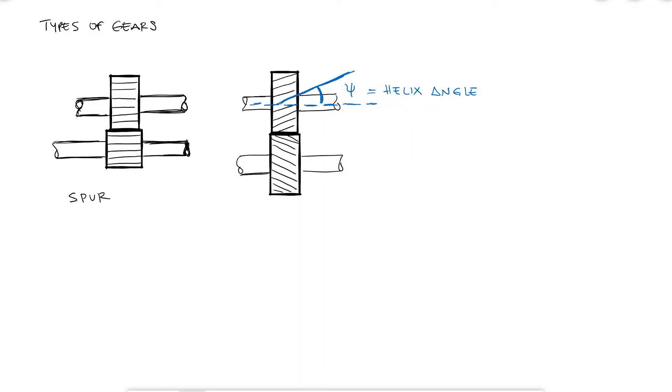If the angle psi, starting at the axis of the gear and rotating towards the orientation of the teeth is a negative angle, meaning you moved clockwise to get to the teeth orientation, the gear is known as a right-hand helical gear. If you move counter-clockwise, starting from the axis of the gear towards the line that is parallel to the teeth of the helical gear, the gear is known as a left-hand helical gear. This angle will cause the shaft to be subjected to axial loading as opposed to spur gears.